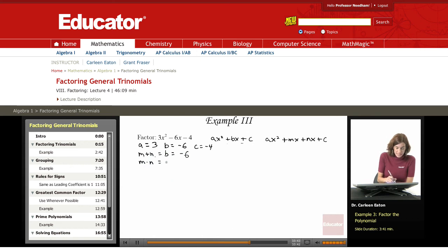The product of m and n is the product of a and c. Here, the product of a and c is 3 times negative 4, to give me negative 12. Okay, so both b and c are less than 0.